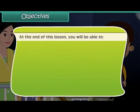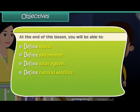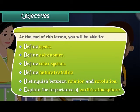At the end of this lesson you'll be able to: define space, define astronomer, define solar system, define natural satellite, distinguish between rotation and revolution, and explain the importance of Earth's atmosphere.